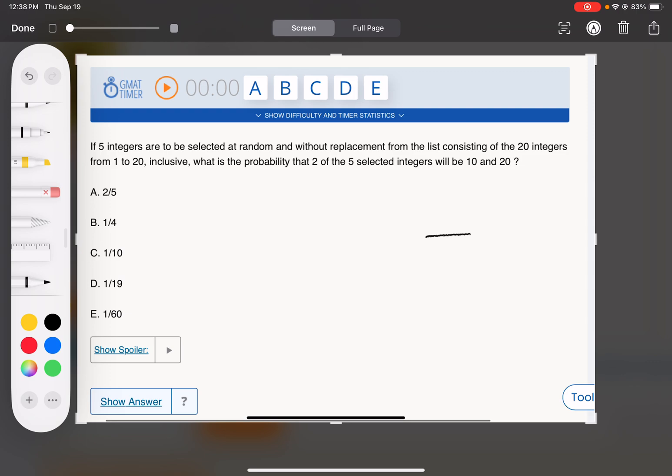So we're going to select 5 integers. The total ways of selecting 5 integers out of the 20 would be 20 choose 5, right?